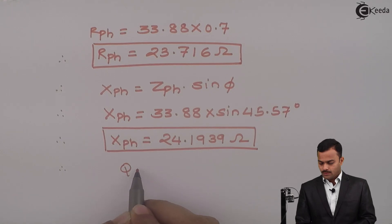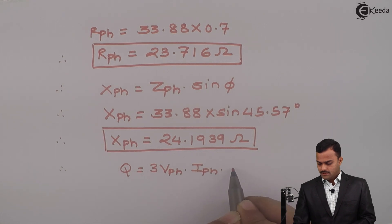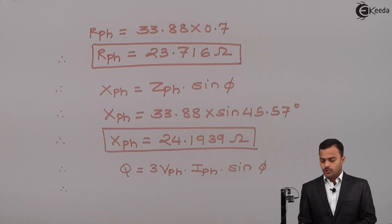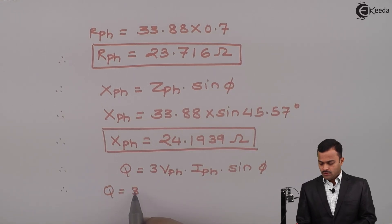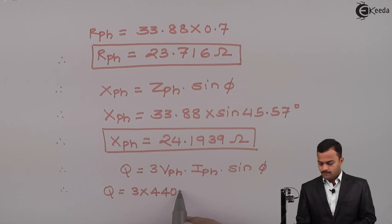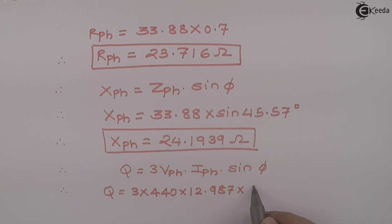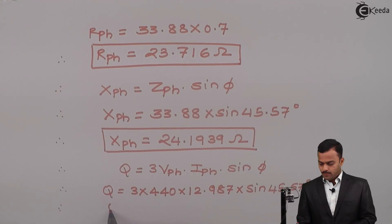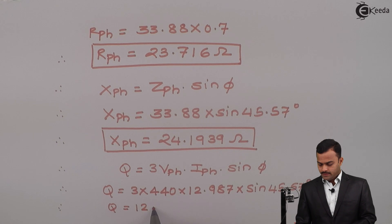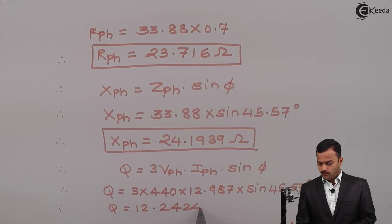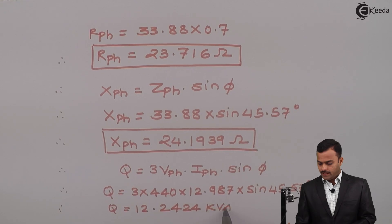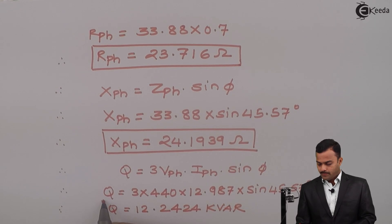Along with this, we are supposed to calculate reactive power. So reactive power Q equals 3 VPh IPh sin phi. All the values are known to us now, so Q equals 3 times 440 times 12.987 multiplied by sin 45.57 degrees. If we solve, you will get reactive power Q equal to 12.2424 KVAR, kilo volt-ampere reactive.